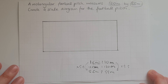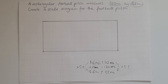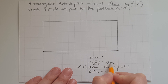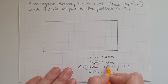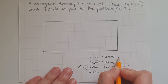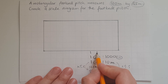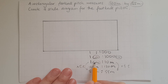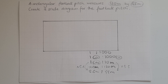Another way to write the scale would be: 1 centimeter to 10 meters. If we convert 10 meters to centimeters, that is 1,000 centimeters, because 1 meter is 100 centimeters, so 10 meters is 1,000 centimeters. Since both units are now the same, we can rewrite this as 1 to 1,000, which is exactly the same as before. Either of these two scale notations would be correct.